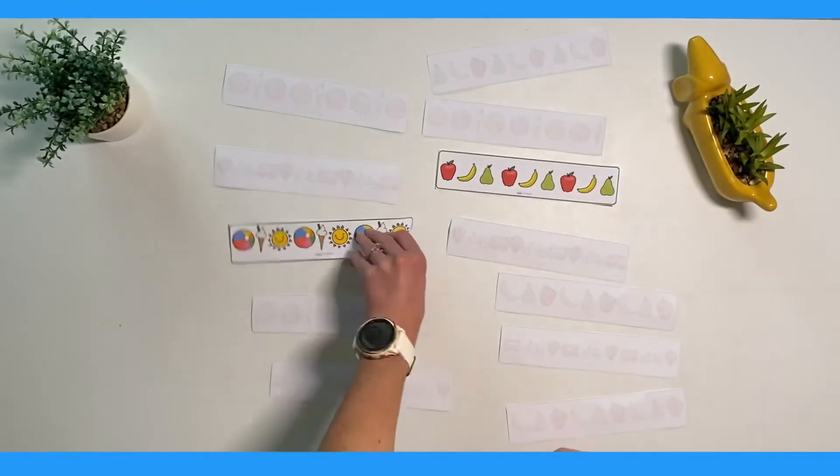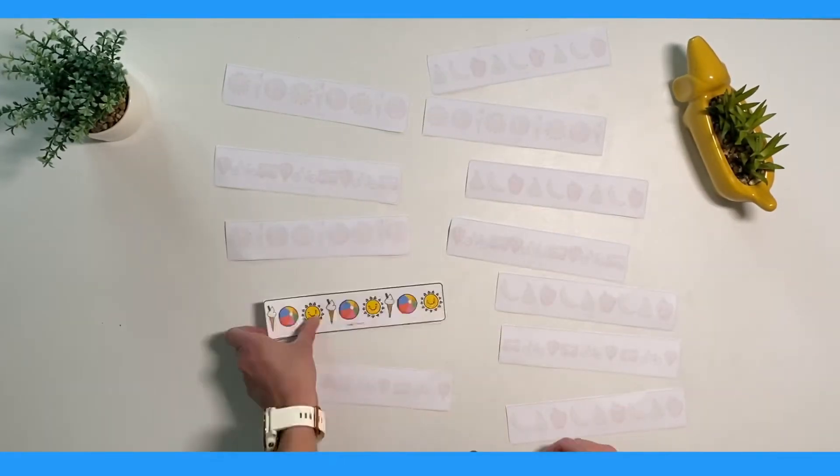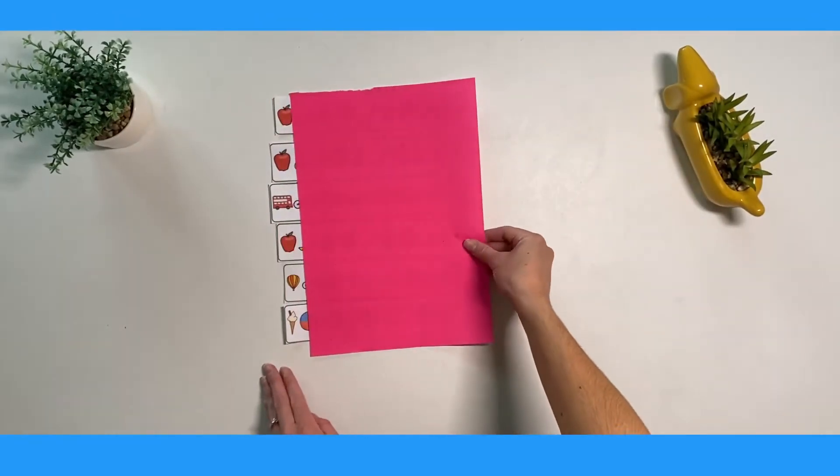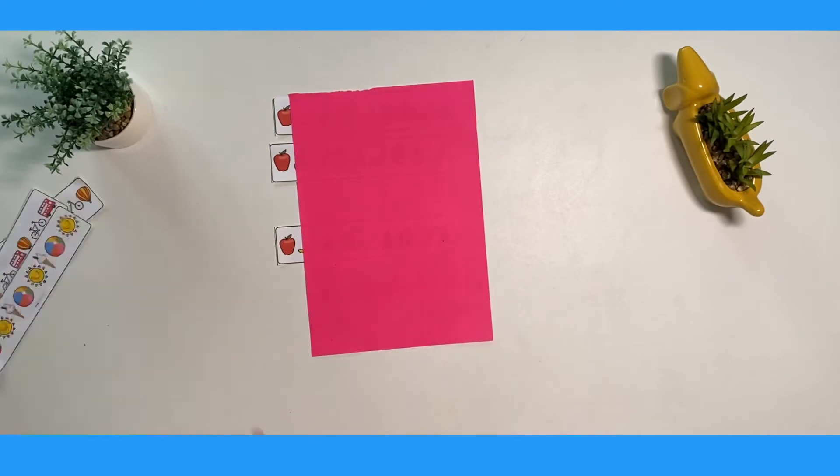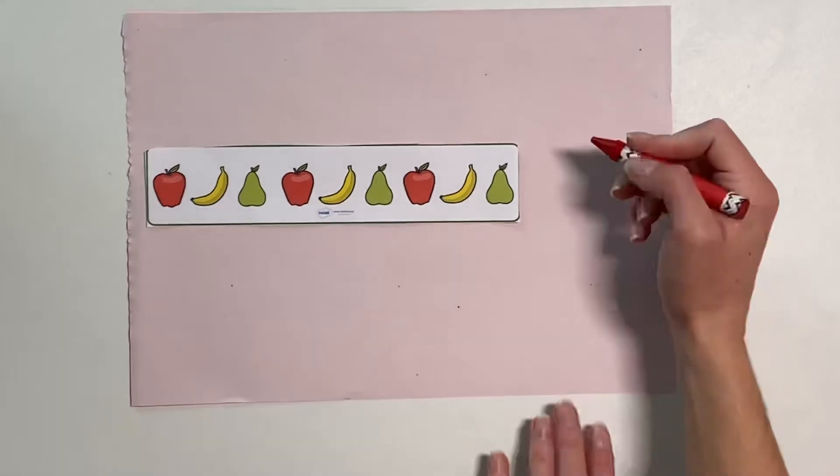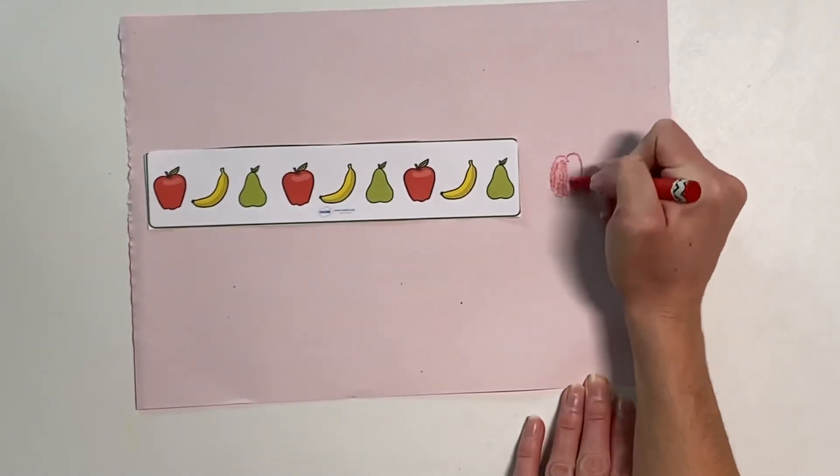You could use our sequence matching cards to play a turn over and reveal game. Or you could slowly reveal items using a piece of paper to find the pairs. You could challenge children to see if they can draw the next one in the pattern.